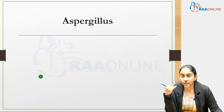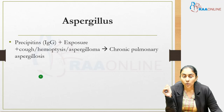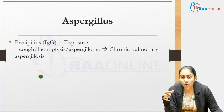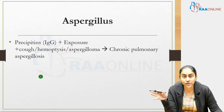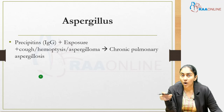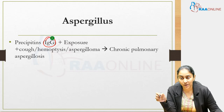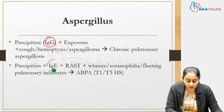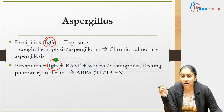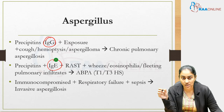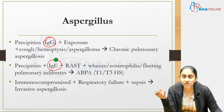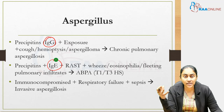Aspergillus lung infections are frequently asked in MRCP. Cough, hemoptysis, a fungal ball with IgG precipitants suggests chronic pulmonary aspergillosis. If there are IgG precipitants plus blood eosinophilia, fleeting pulmonary infiltrates, and central bronchiectasis, this favours allergic bronchopulmonary aspergillosis (ABPA). An aspergillus infection in an immunocompromised patient presenting with sepsis and respiratory failure indicates invasive aspergillosis.